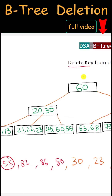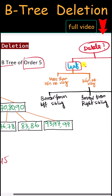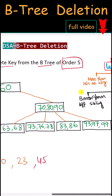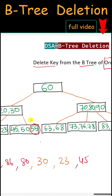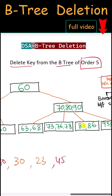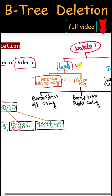First, we have 55. Since 55 is less than 60 and greater than 30, we find 55 here. The key 55 is in a leaf node, and this node has more than the minimum number of keys, so we can simply delete that key.